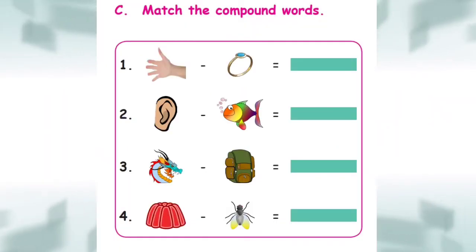See, match the compound words. First, we have two columns. We combine first column with second column. So, the first picture is, hand. We combine the hand with second column pictures. First, we combine ring. Hand, ring. No, it is not correct.